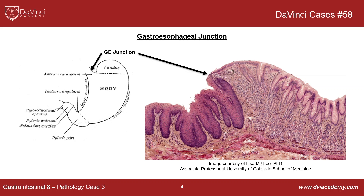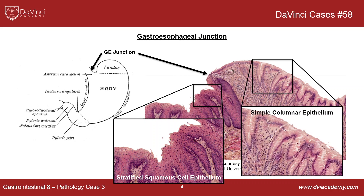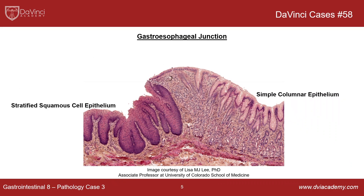In the histological section — courtesy of collaborator Lisa Lee from the University of Colorado School of Medicine — you can see that on the left in the esophagus, you have stratified squamous epithelium, which is the native epithelium of the esophagus and completely normal. Then in the stomach, you have simple columnar epithelium. You can see the transition point between these two epitheliums. Keep this image in mind if you're taking a histology exam, as they very frequently ask about this.